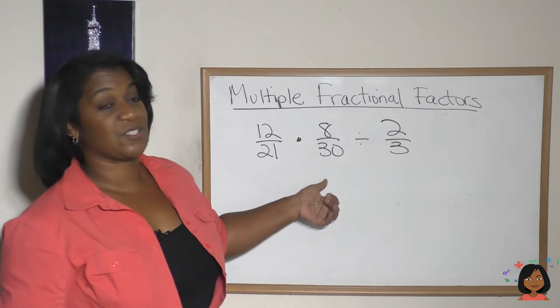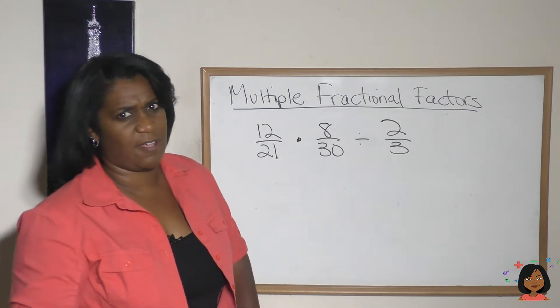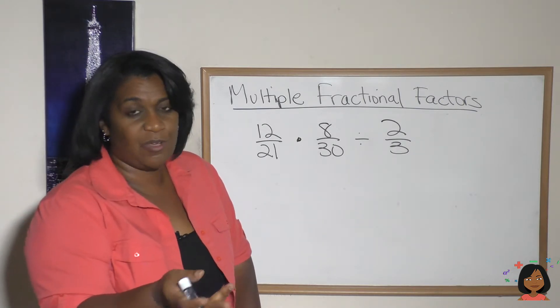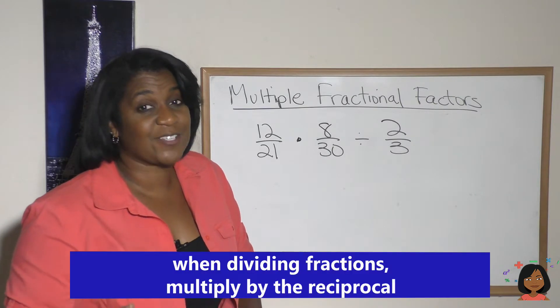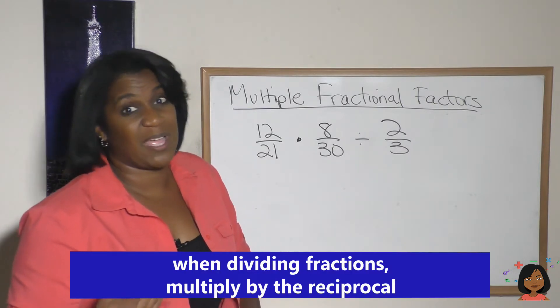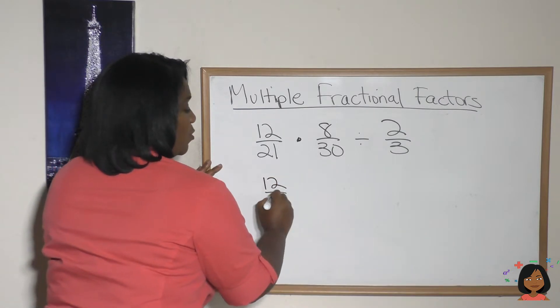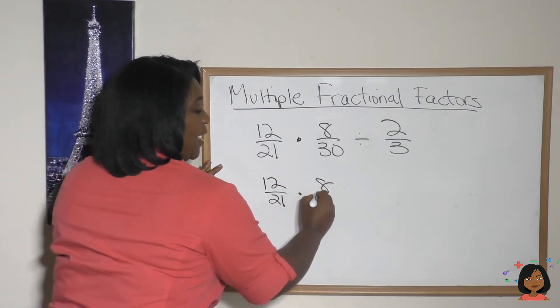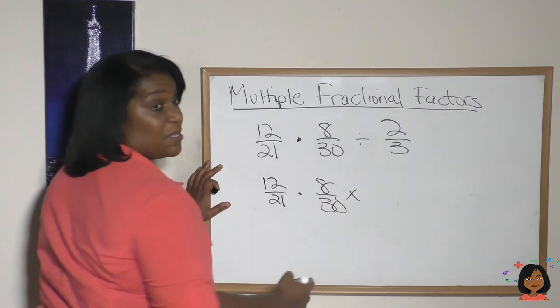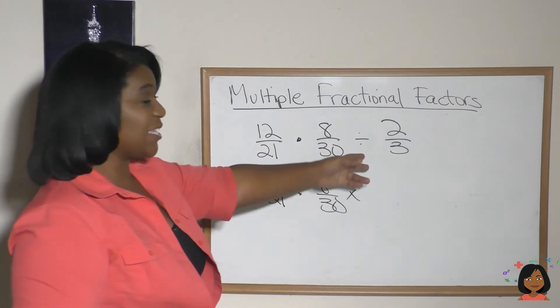Now what happens when we are multiplying two things but then dividing another fraction at the end? What do you do? Well, if you remember, when we divide fractions we have to multiply by the reciprocal. So let's rewrite this: 12 over 21 times 8 over 30.